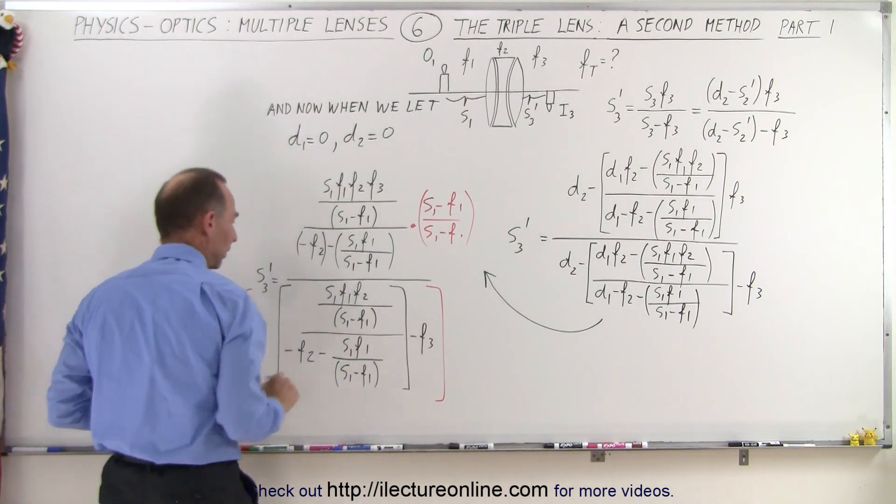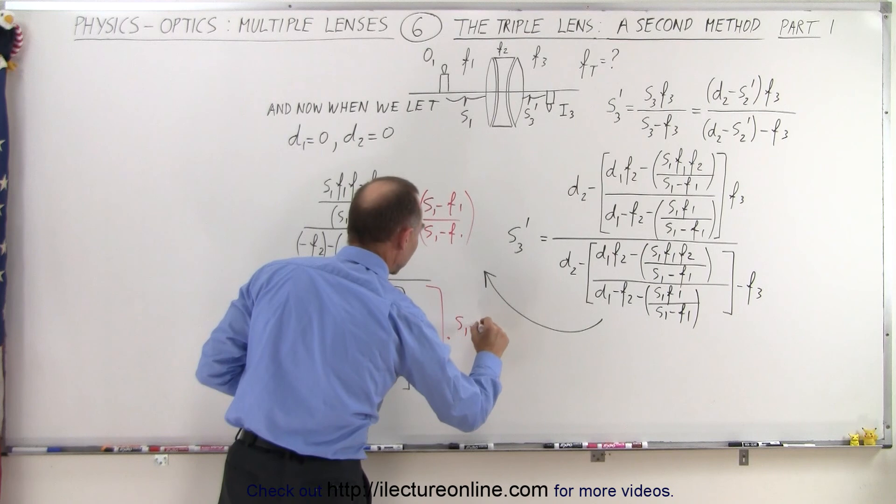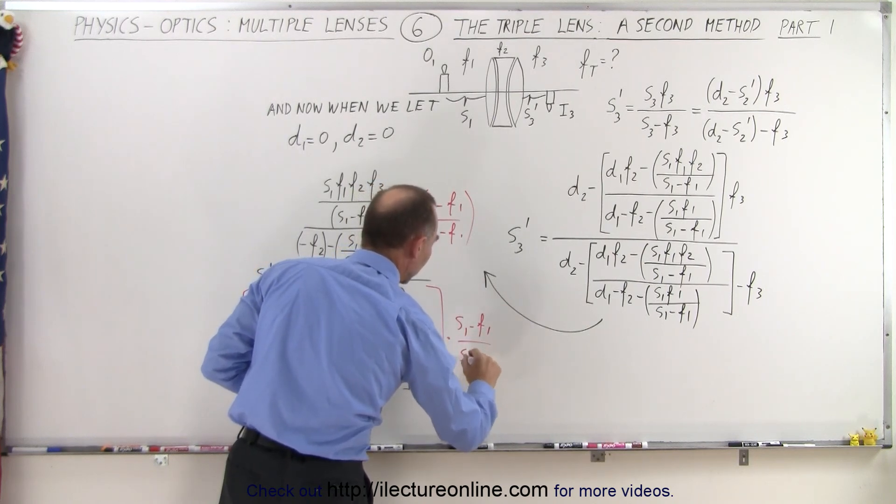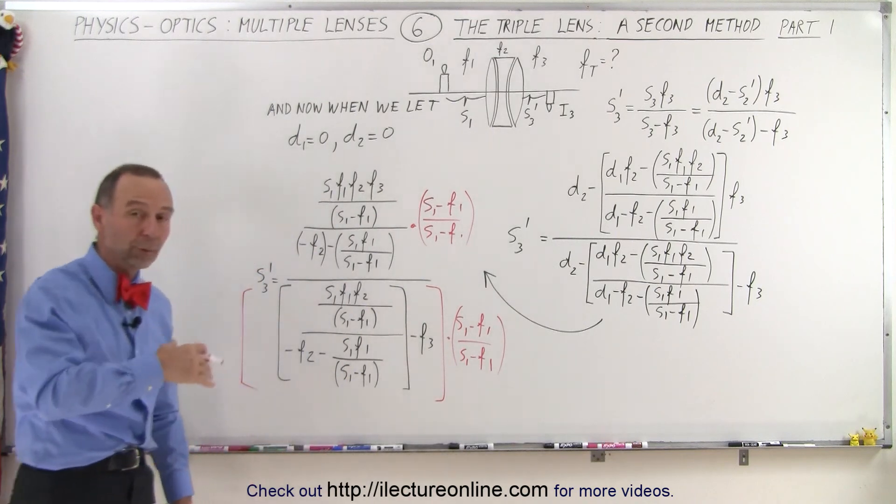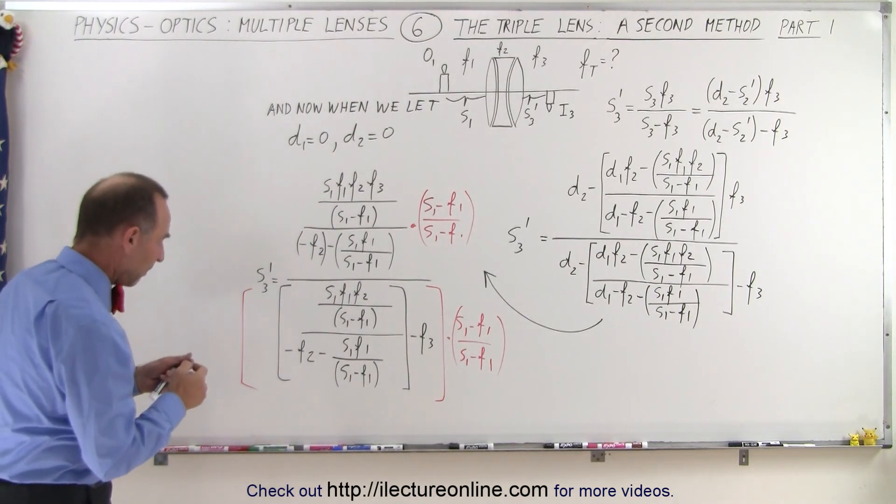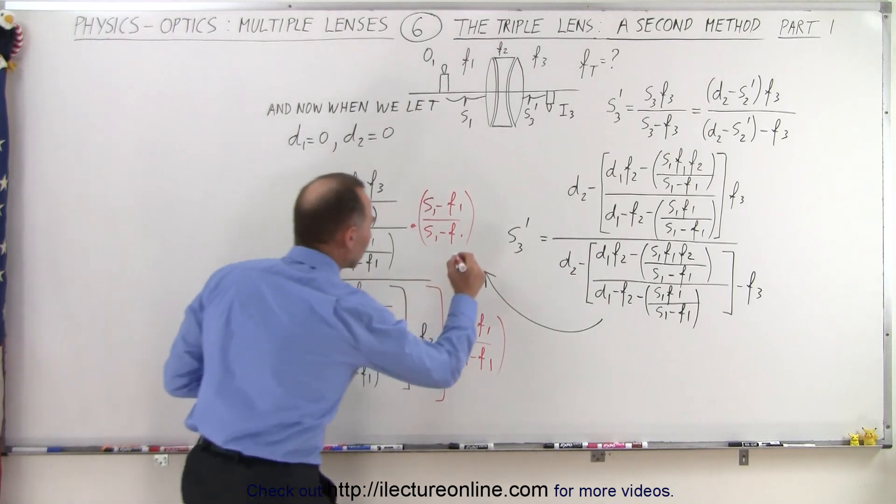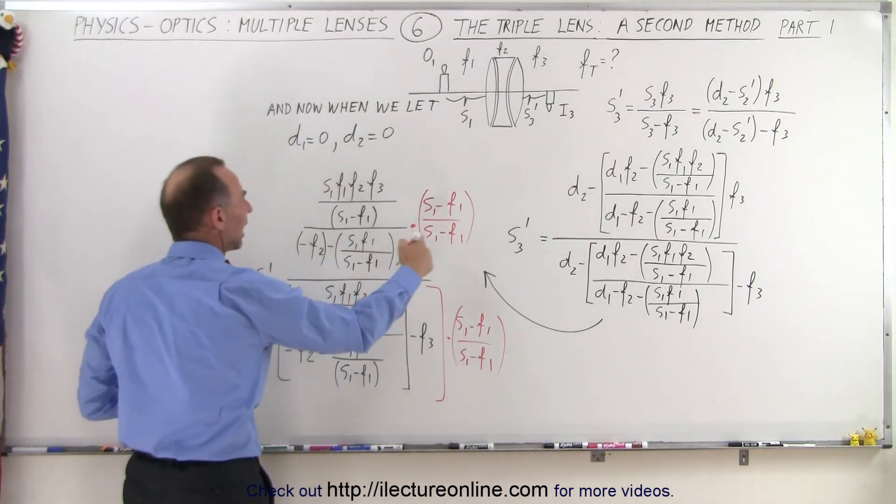Put some brackets around there. So we're going to multiply this by S1 minus F1 over S1 minus F1. Of course, that's basically multiplying both the numerator and the denominator by a 1. So this should be a 1 here. Now when we do that,